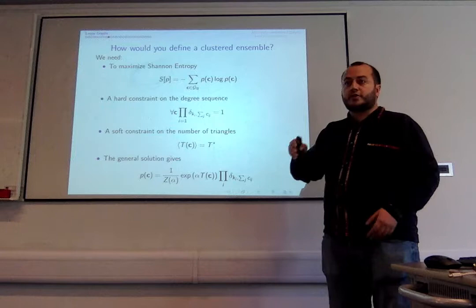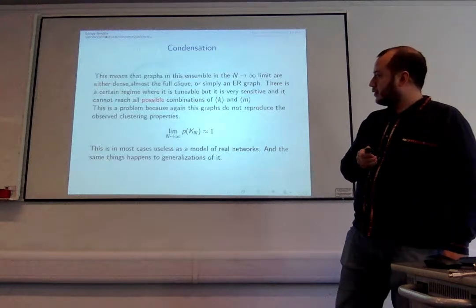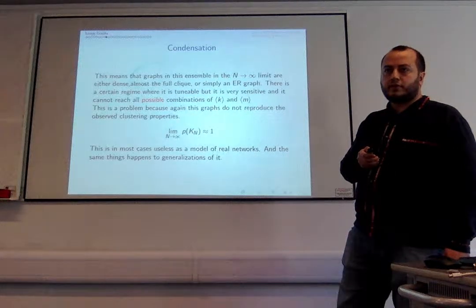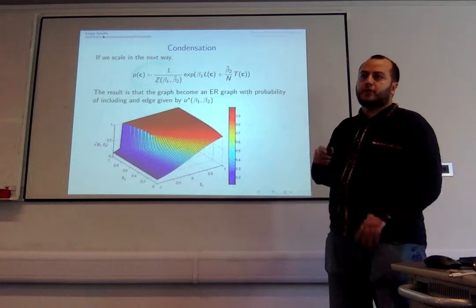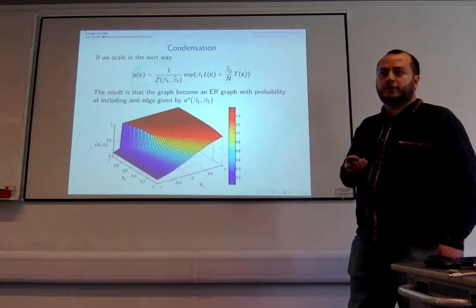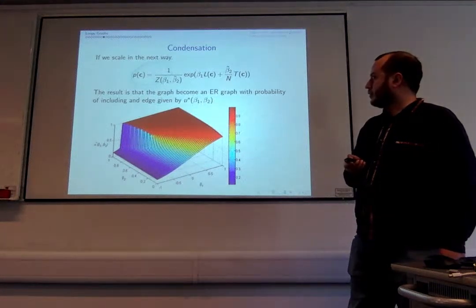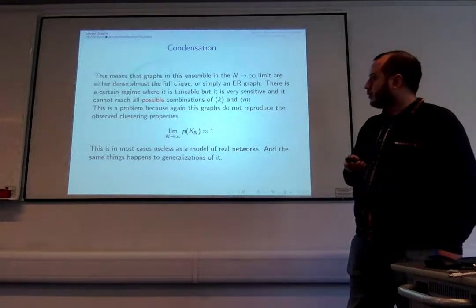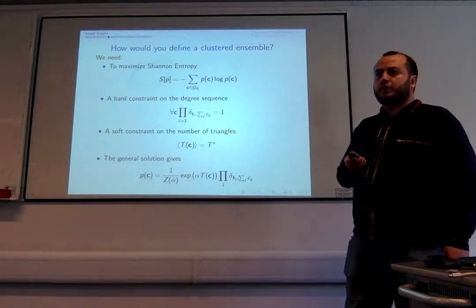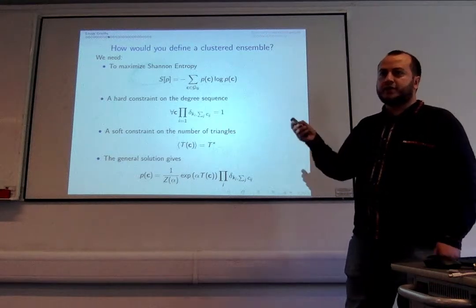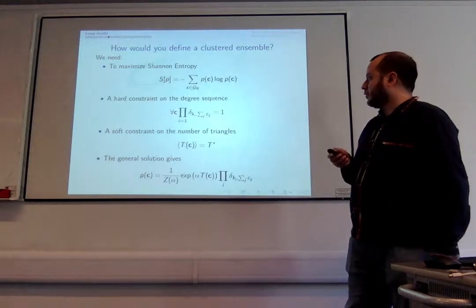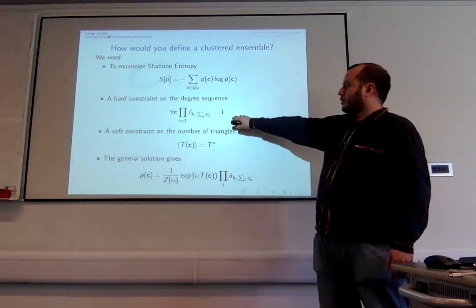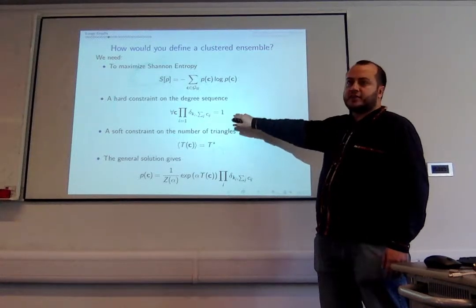Question from audience: on the previous slide, are you constraining the degree sequence on average or fixing global measures? Answer: yes, that result is just for the expected number. Question: would the result change with a softer degree constraint? Answer: I haven't looked at that particular problem, but this graph has so many triangles I think it could also dominate basically.